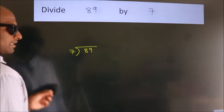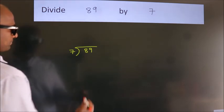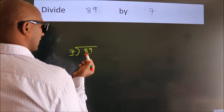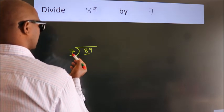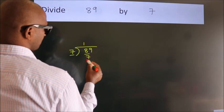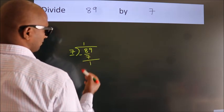This is your step 1. Next, here we have 8, here 7. A number close to 8 in 7 table is 7 once 7. Now, we should subtract. We get 1.